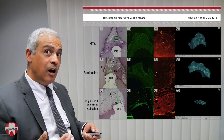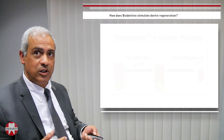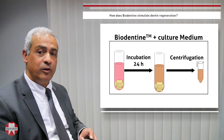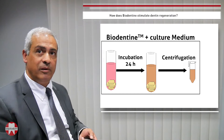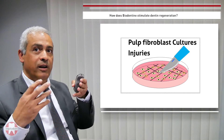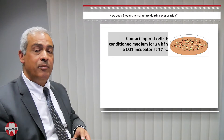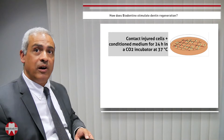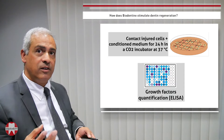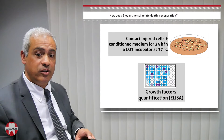To understand how this dentin bridge forms, we simulated the situation in vitro: Biodentine was incubated with culture medium and applied to pulp fibroblasts on which injuries were made. We then measured growth factor synthesis. We found that angiogenic growth factors are produced, and angiogenesis is essential for the regenerative process.